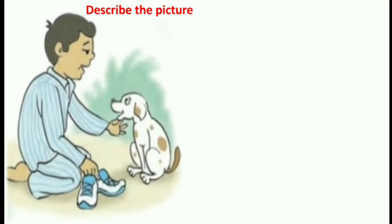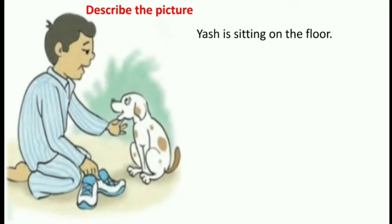The first sentence that I have here is: Yash is sitting on the floor. You all know this boy is Yash because we have already learnt about him. So he is sitting on the floor. That is my first sentence — I am describing what he is doing in this picture.